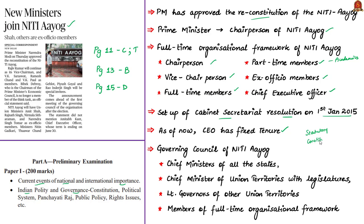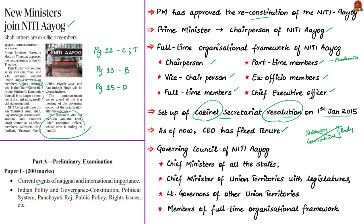The ex-officio members are from the Union Council of Ministers, nominated by the Prime Minister. Part-time members are appointed from leading universities, research organizations, and relevant institutions. The present CEO of Niti Aayog is Shri Amitabh Khant, whose term comes to an end by June 30th. The reconstitution of Niti Aayog is not new — even in June 2018 it was reconstituted. Reconstitution normally means dropping a member or including a new designation. For example, Mr. Bibek Debroy, chairperson of the Prime Minister's Economic Council, is not a member of the recently reconstituted Niti Aayog.